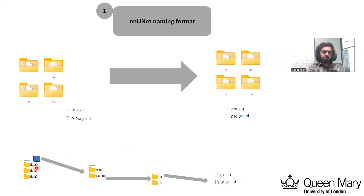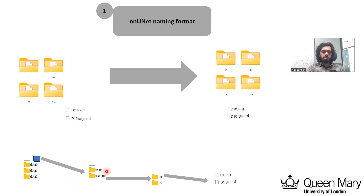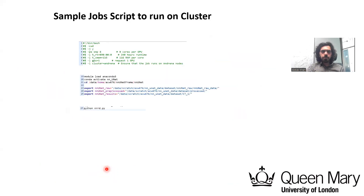In the next step we need to convert this dataset to Raw Data Format and provide the path to the data0 folder. An important point: even if you want to use all your data for training, you still need to create the testing folder. For any dataset there should always be two folders — training and testing — even if the testing folder is empty.